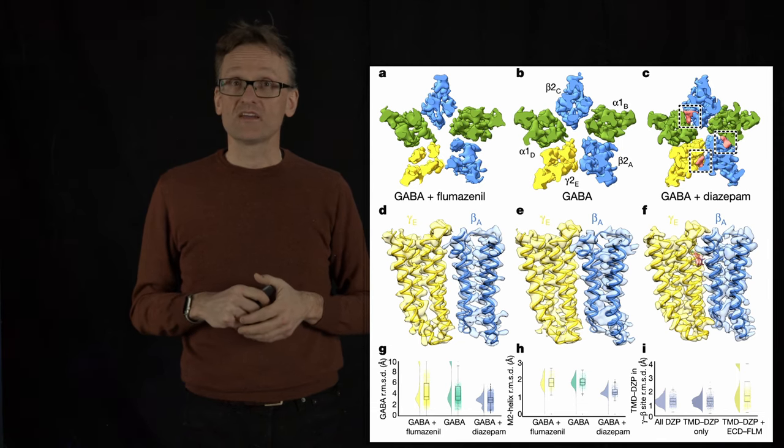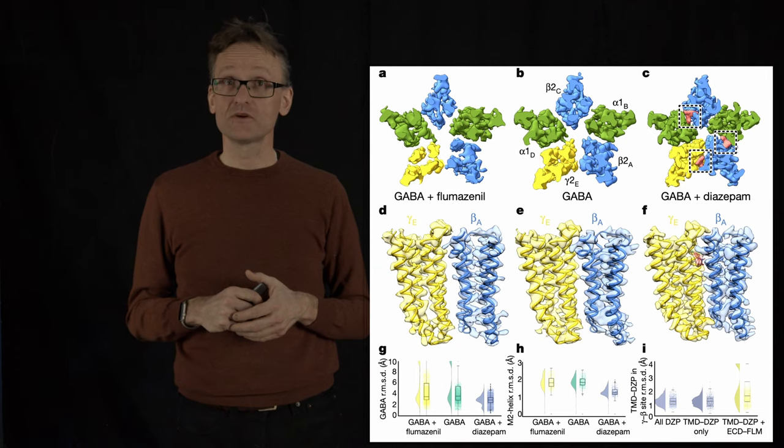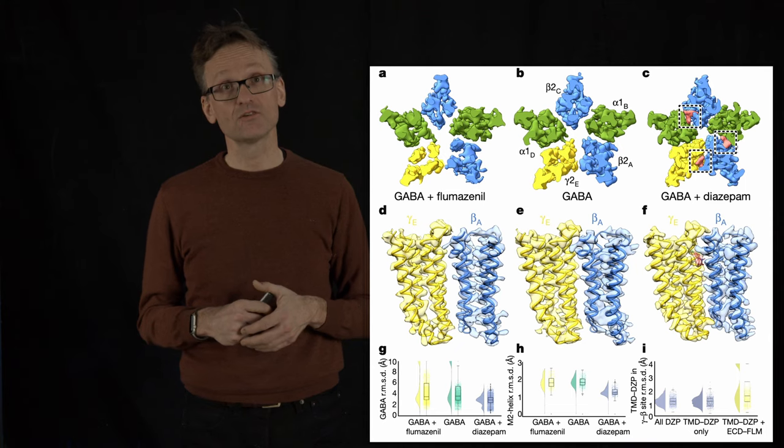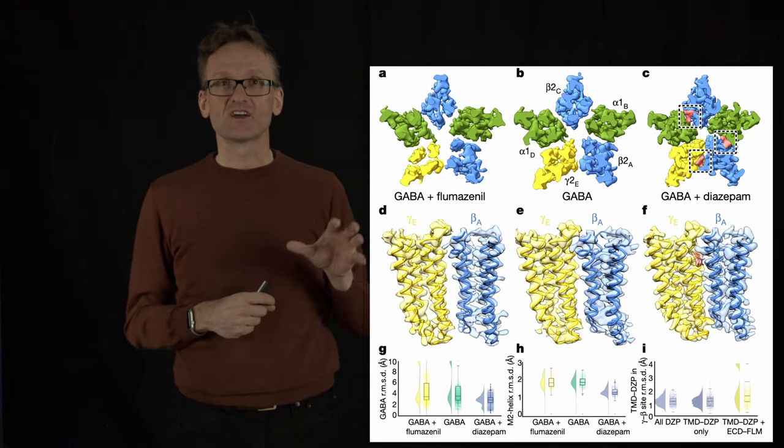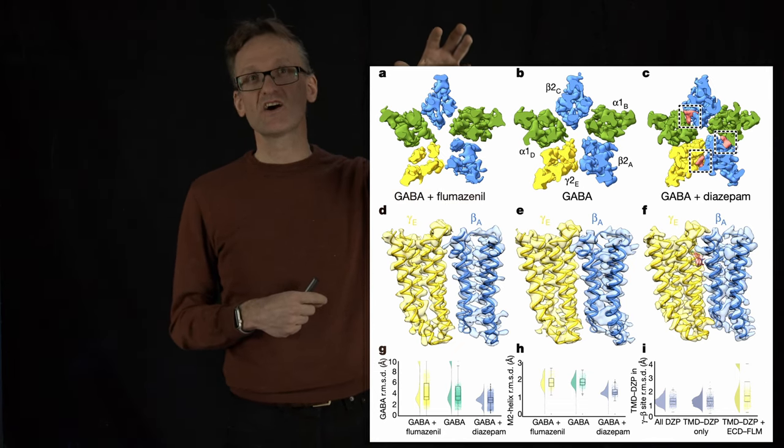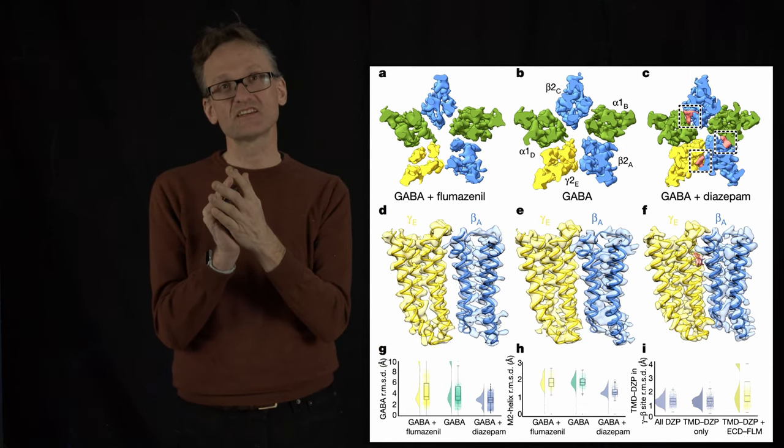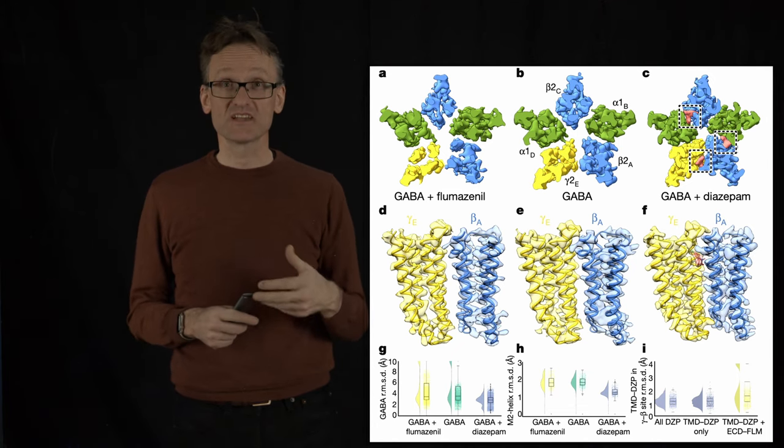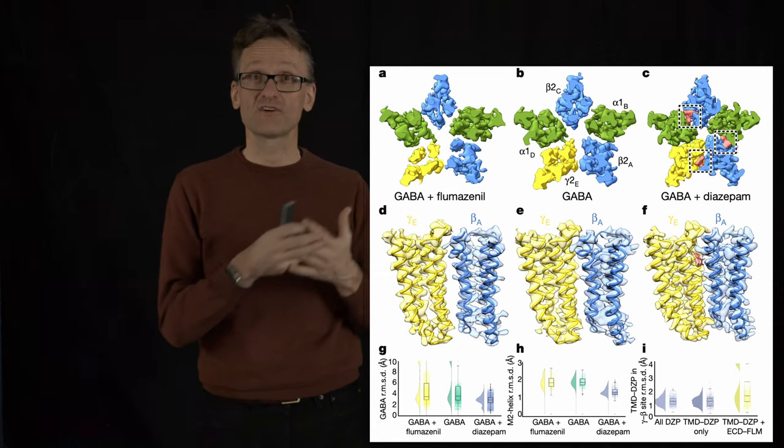If you do this experiment and happen to take too much diazepam Valium, that can be pretty severe, and then you might end up in the emergency room. And then they have to give you an antidote, and the antidote to this would be flumazenil, which is another small compound. GABA plus flumazenil, when we're binding flumazenil to the same protein, do you see here how flumazenil appears to have the opposite effect? It makes the entire transmembrane domain slightly looser and pushes the subunits apart. So it makes sense. Flumazenil will have an opposite effect and counter the effect of diazepam.